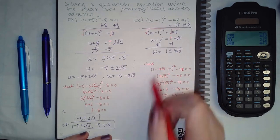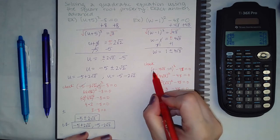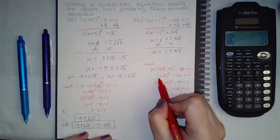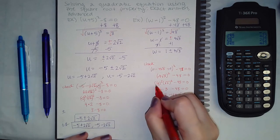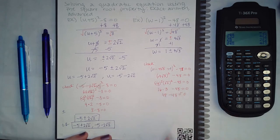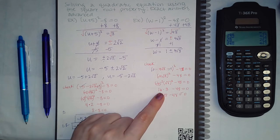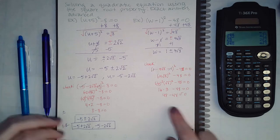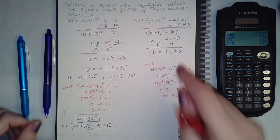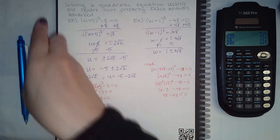So the positive version checks out. To check the negative version, it would be 1 minus 4√3. When the ones cancel, I have negative 4√3, and negative 4 squared still results in positive 16, which still gives 48 minus 48 equals zero.